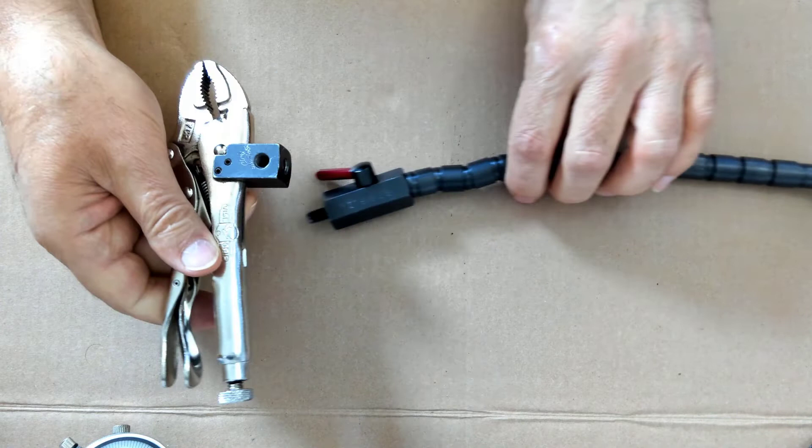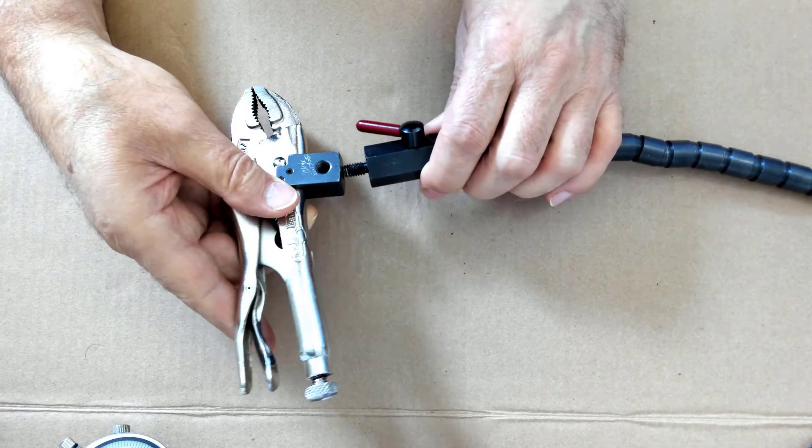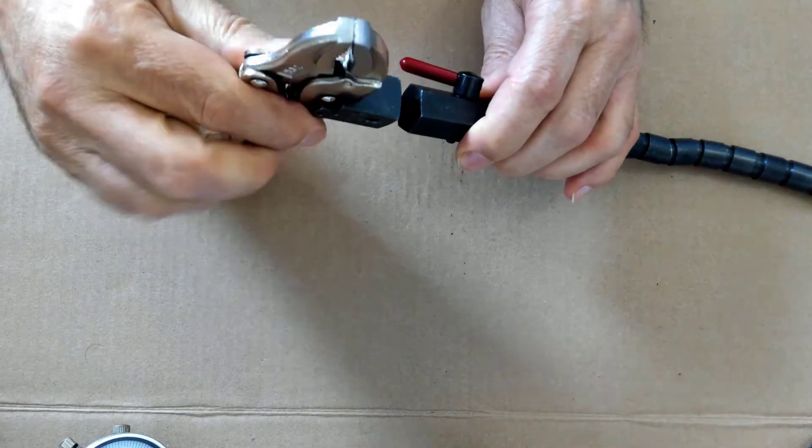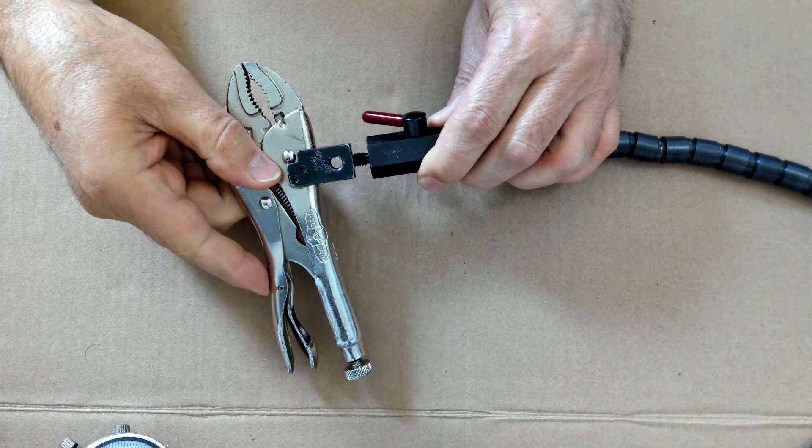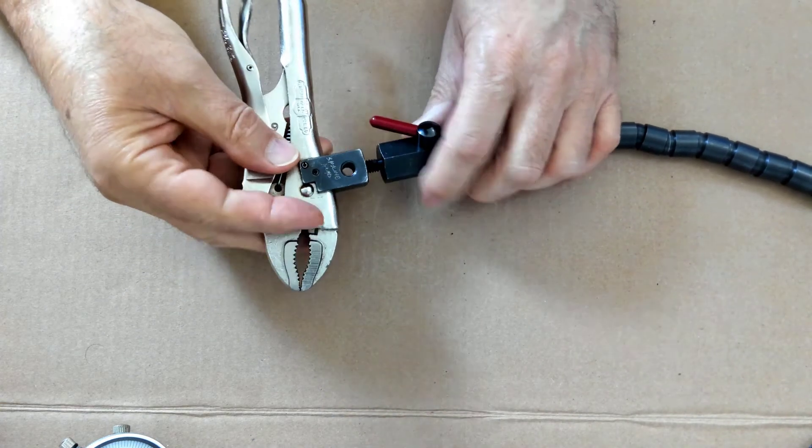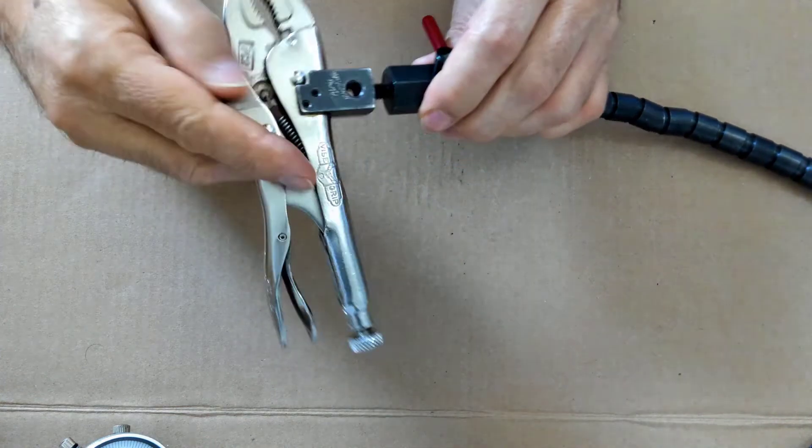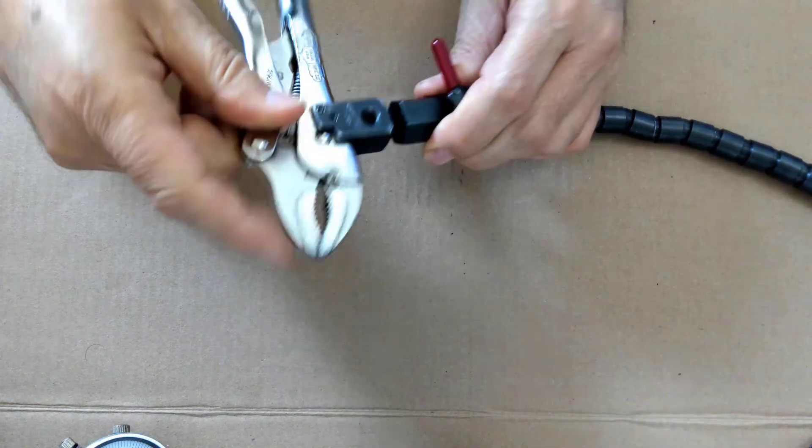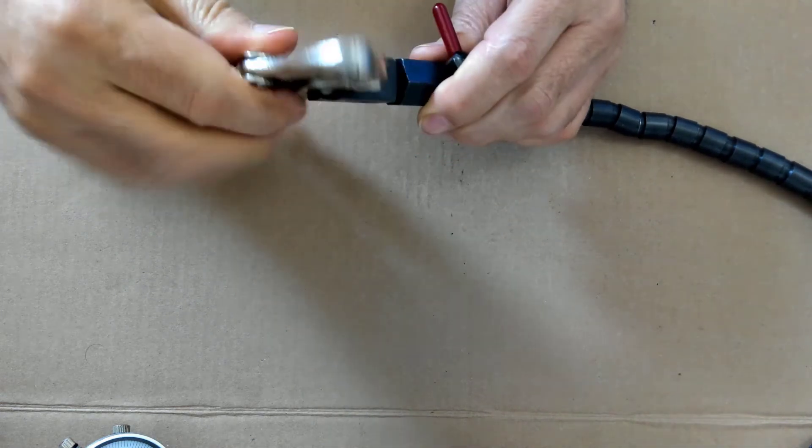And finally, on the vise grip end, you can thread this into one of three positions. You can thread it in at the top or one of the side positions right here. The key to doing this is to make sure that it is tight. You don't want it to be loose.